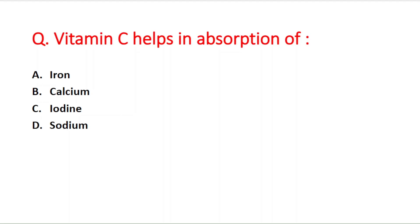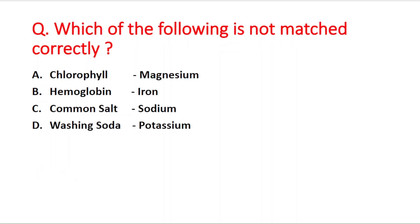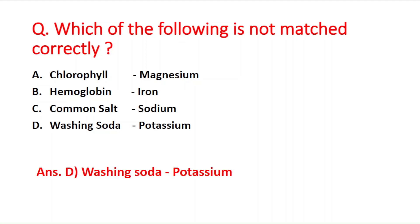Next question: which of the following is not matched correctly? Option A: chlorophyll contains magnesium. Option B: hemoglobin contains iron. Option C: common salt contains sodium. Option D: washing soda contains potassium. The incorrect pair is option D — washing soda does not contain potassium; its chemical name is sodium carbonate.